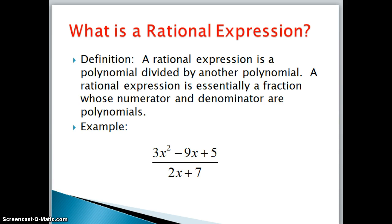First, our definition. A rational expression is a polynomial divided by another polynomial. A rational expression is essentially a fraction whose numerator and denominator are polynomials. For example, we have 3x² - 9x + 5 over 2x + 7. So here the numerator of this fraction is a trinomial and the denominator of this fraction is a binomial. And we'll see that rational expressions behave just like fractions do.